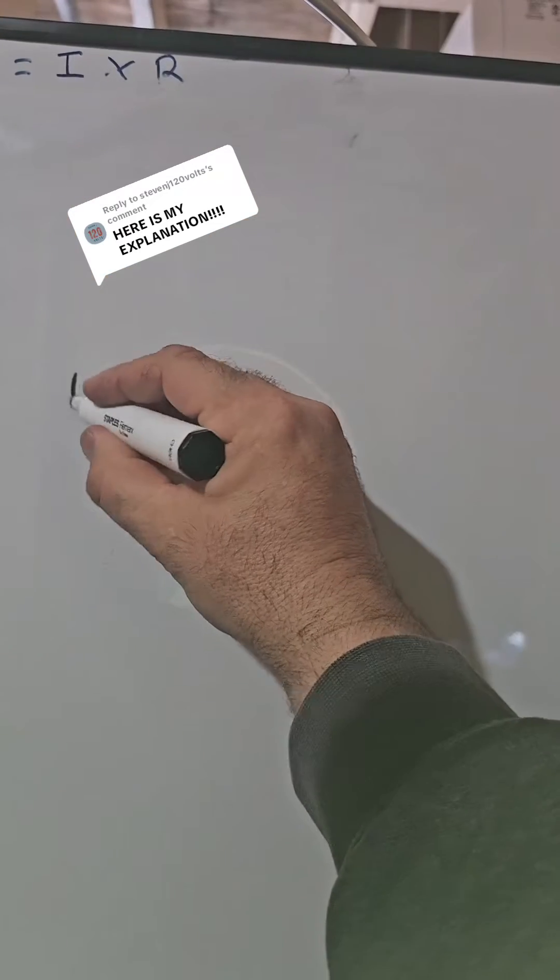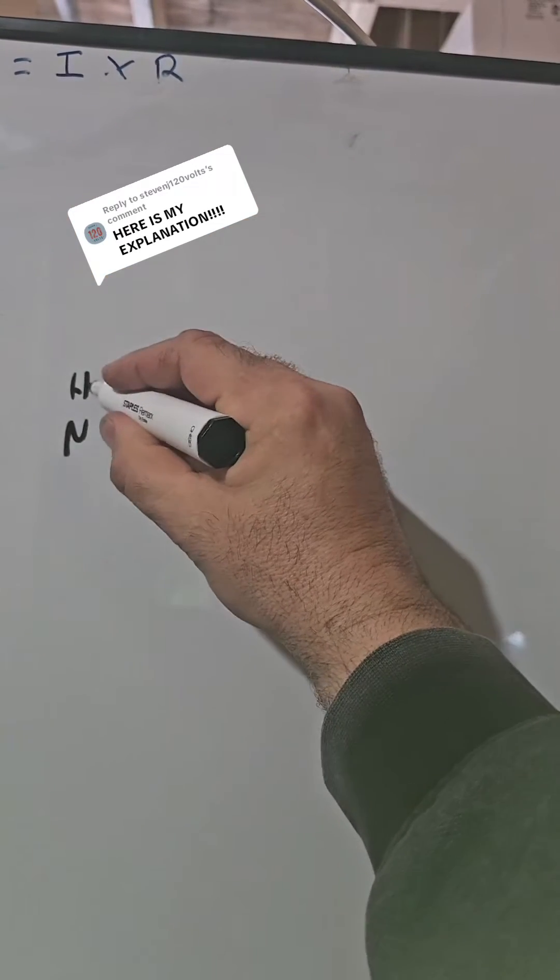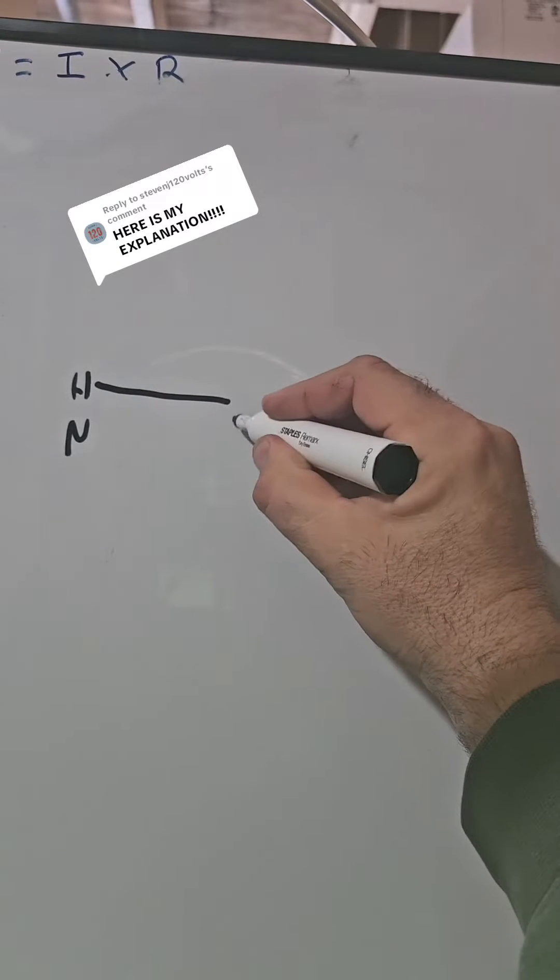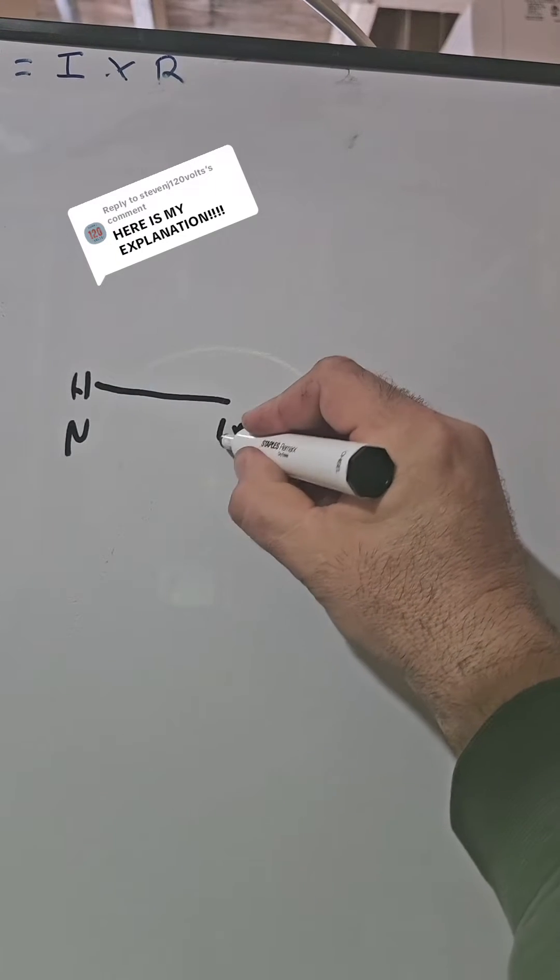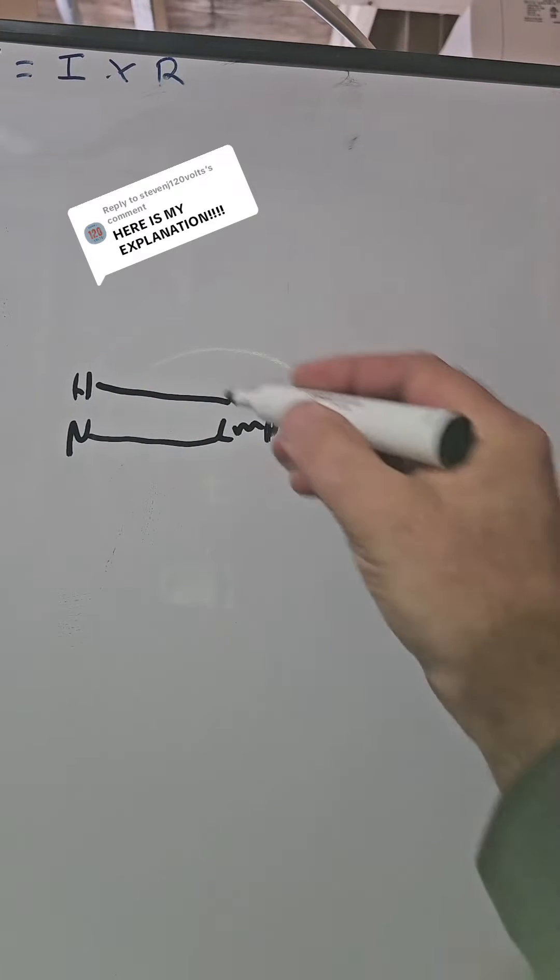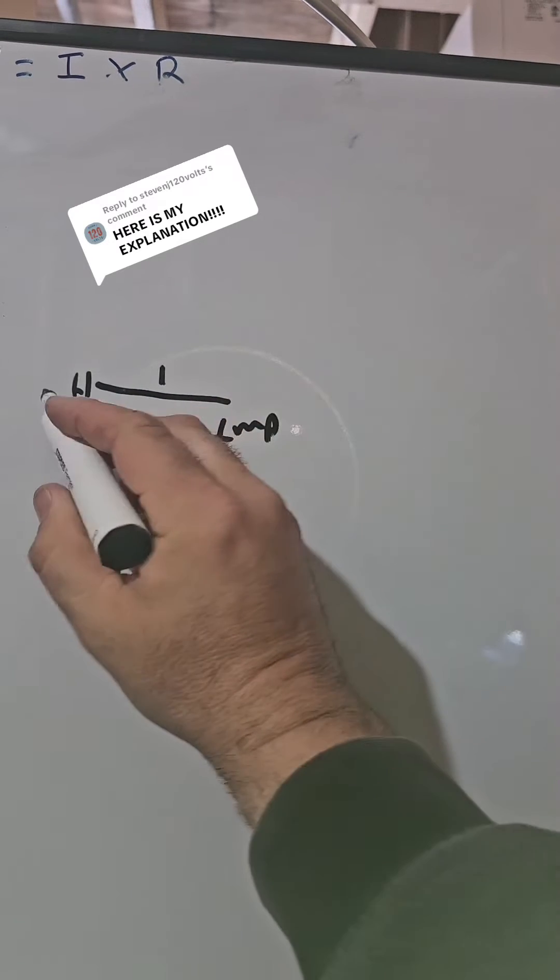Okay, so in the normal circuit, you have a hot and a neutral. The electricity leaves on the hot, goes through his lamp, and comes back on the neutral. So say there's one amp here, one amp here.